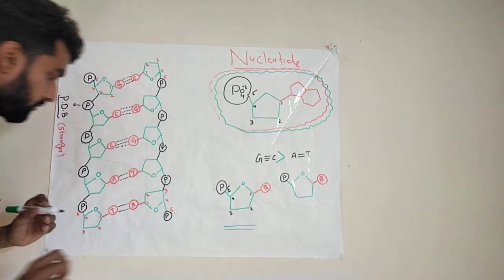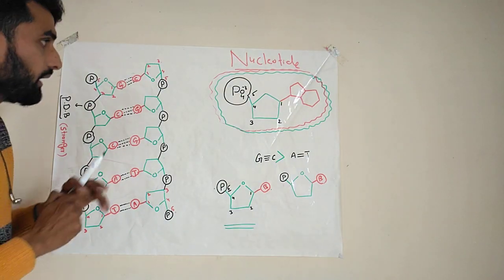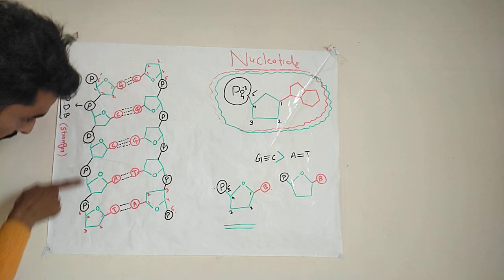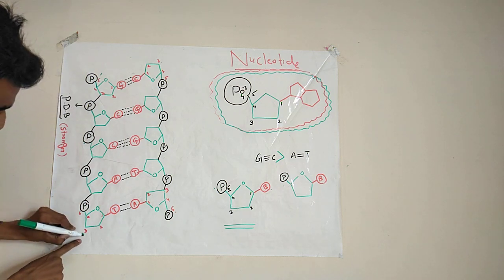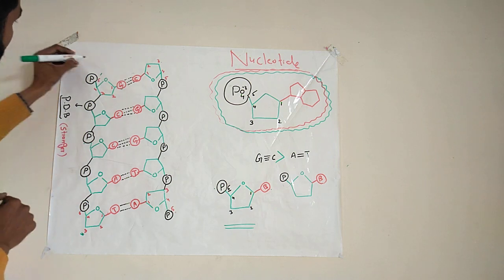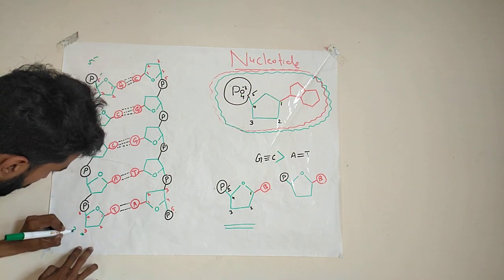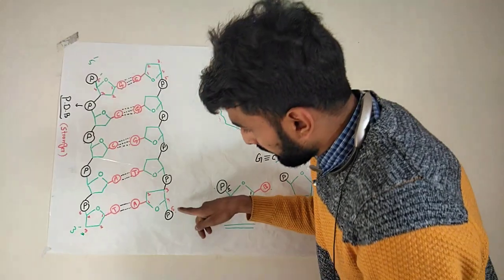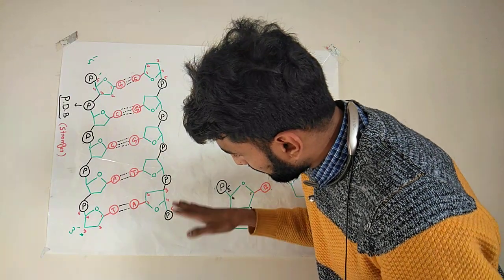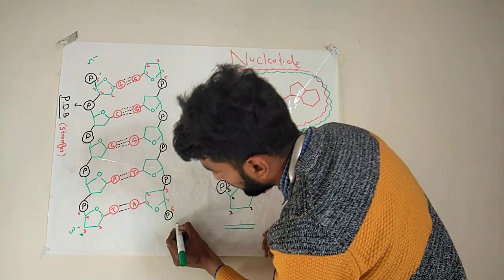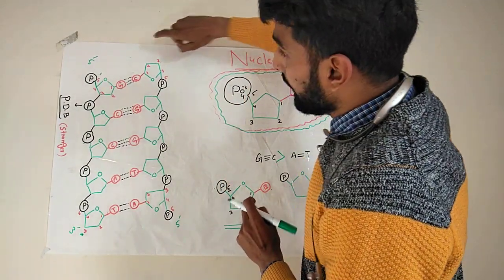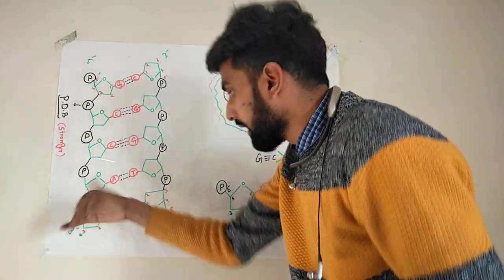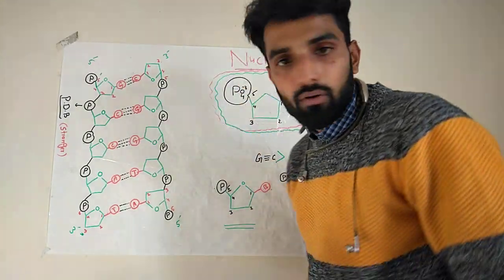Now focus on one more thing — look at the positions of carbon. Here you can see carbon number five is at the top and carbon number three is at the bottom, so this strand is five prime to three prime. In the complementary strand, carbon number five is at the bottom — so this will be five prime — and carbon number three is at the top — so this will be three prime. So if one strand is five prime to three prime, the other strand will be three prime to five prime.